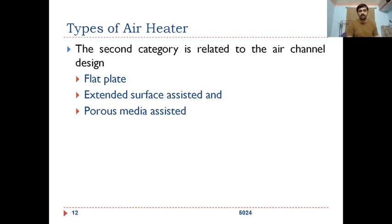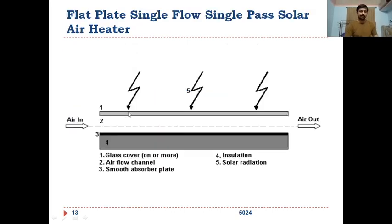The second classification is related to the air channel design — how the channel for airflow is designed. It can be flat plate, extended surface assisted with fins, or porous media assisted. The flat plate type is similar to single flow single pass; instead of liquid tubes, there is an air flow passage or single channel for air.